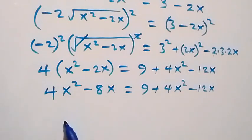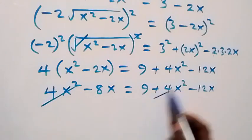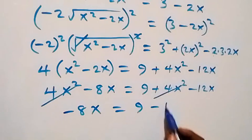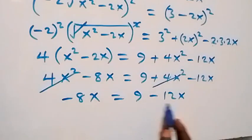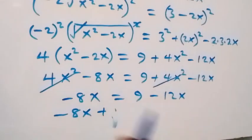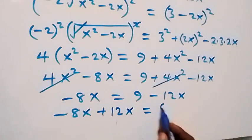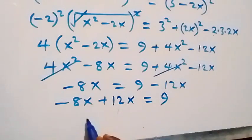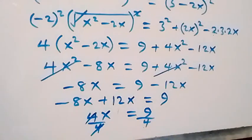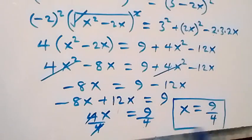When we look at both sides, we have 4x² on both sides, so subtracting 4x² on both sides, those cancel out. We are left with minus 8x equals 9 minus 12x. Rearranging gives us minus 8x plus 12x equals 9, so 4x equals 9. When we divide both sides by 4, we get x equals 9 over 4.